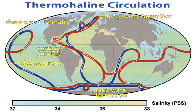Oceanic heat content refers to the heat stored in the ocean. The changes in ocean heat play an important role in sea level rise because of thermal expansion. Ocean warming accounts for 90% of the energy accumulation from global warming between 1971 and 2010.